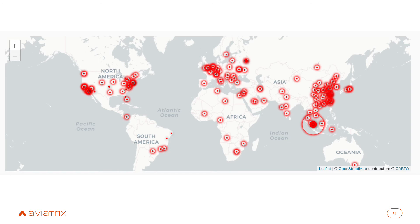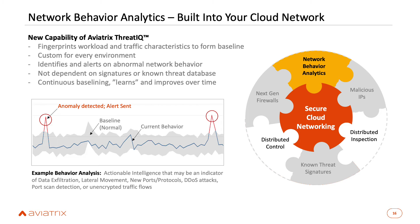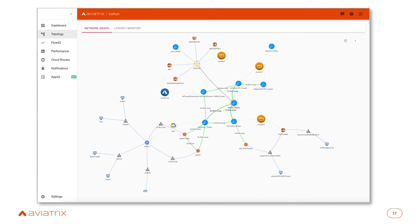Having a data plane that can look at every packet going across the network is very powerful from a security perspective. That was an example of known threats — known malicious IPs. The next thing we're doing is network behavior analytics, which takes a baseline of an application environment and identifies which ports and protocols are being used. If new ports and protocols appear a couple of weeks later, that could indicate a new application, but more likely it's malicious traffic moving laterally across the network on unused ports and protocols — and this gives you the ability to highlight that as a possible security problem.